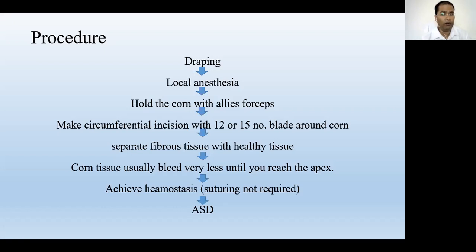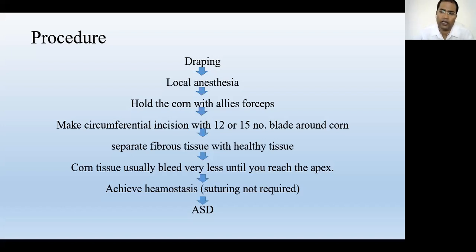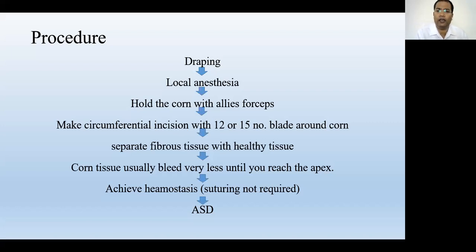How do you know you have removed the complete corn? When you remove the corn root, there must be some bleeding. If you achieve bleeding below the corn root, it means you are doing it correctly. Then achieve hemostasis by pressure or cautery, clean the tissue with betadine solution and antibiotic solution, and do antiseptic dressing. Change the dressing on the second or third day; within seven to ten days the wound will heal itself.